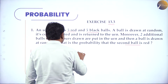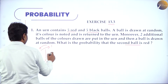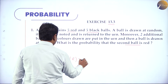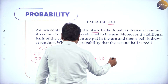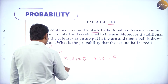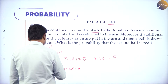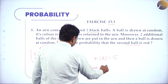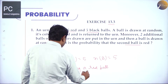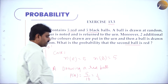Number of red balls initially: two cases are there. Case 1 — number of red balls is 5, number of black balls is 5. Drawing a red ball, event A. What is the probability of drawing a red ball in the first case? P(A) = 5 red out of total 10 balls = 5/10 = 1/2.